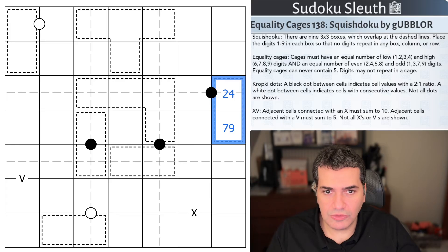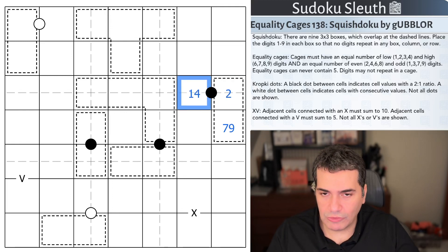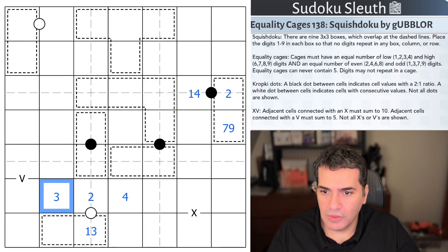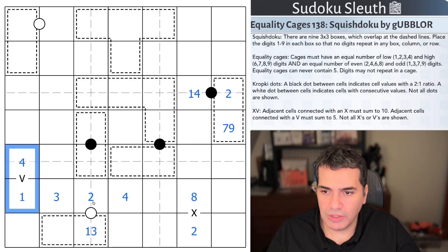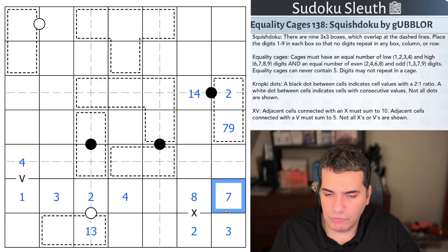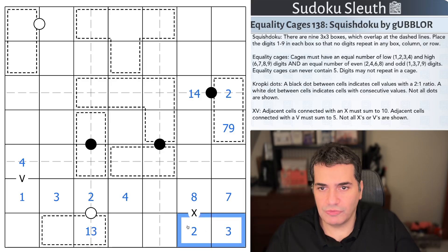We also have kropki dots and XVs. A black dot indicates cell values are in 2 to 1 ratio. So if this cell is a 2, this would be 1 or 4, so that one cell is double the other. If it is a white dot, let's say that's a 2, white dots means they're consecutive. This would be 1 or 3. Not all dots are shown, a 4 here, a 3 there. All of that is allowed even if there isn't a black dot or white dot. Adjacent cells connected with an X must sum up to 10. So if this cell is a 2, this would have to be an 8. And Vs must sum up to 5. Not all are shown again. Absence of an X, absence of a V, all fine.